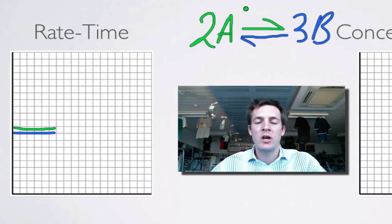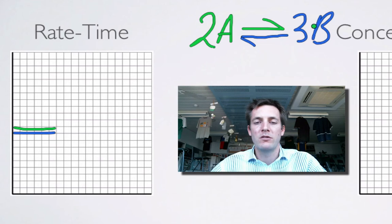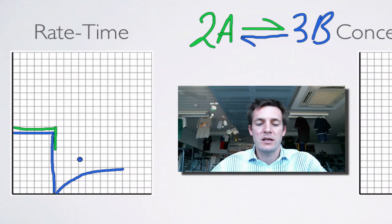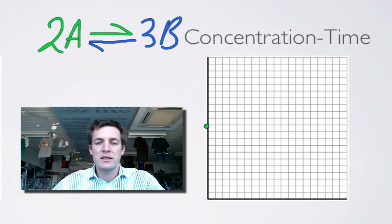Which rate is going to fall the most? Le Chatelier says this system is going to try and increase the pressure because we've decreased it. Where are the most moles of gas? Over on the right — so this system has to move in the forward direction. The forward reaction is going to be favoured, meaning it falls but not by as much as the backward one. Then as they return to equilibrium, the backward one speeds up because the forward one is producing more products. As those A's get used up, the forward reaction slows down, and they reach the same height again — the system reaches equilibrium.